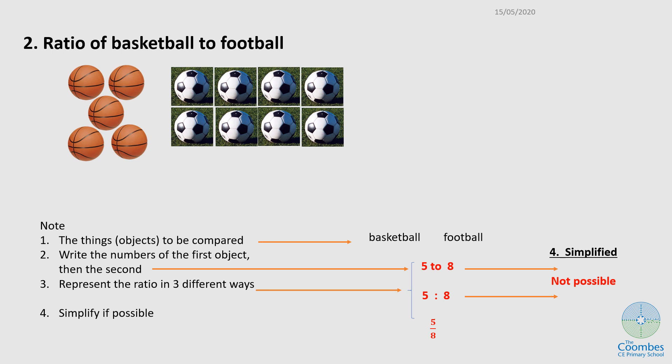Let's look at this second one: how to write the ratios of basketball to football. The things to be compared are basketball first, and then football. Then the number of basketballs, if you count them, they are five. Then the footballs, which are eight.